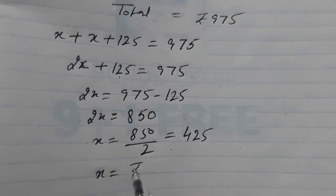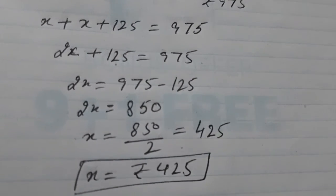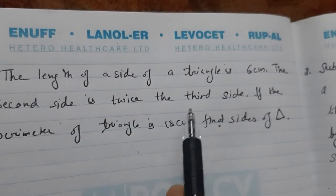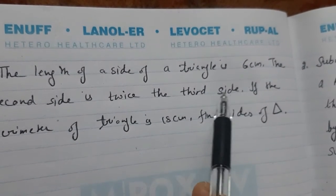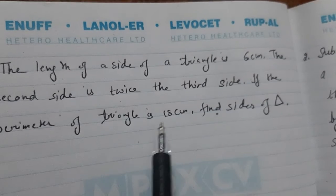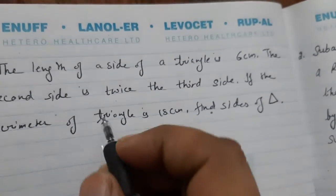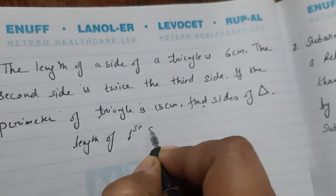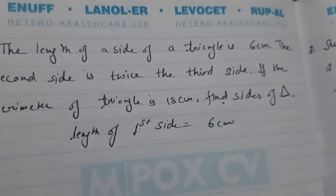So, Subramaniam donated how much money? Rs. 425. Next is, length of the side of a triangle is 6 cm and the second side is twice the third side. If the perimeter of triangle is 18 cm, find the sides of triangle. So, first of all, length of first side is 6 cm.